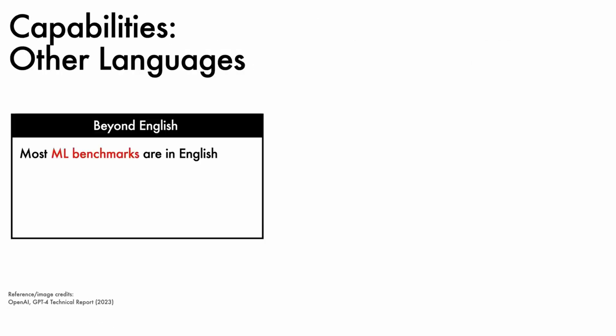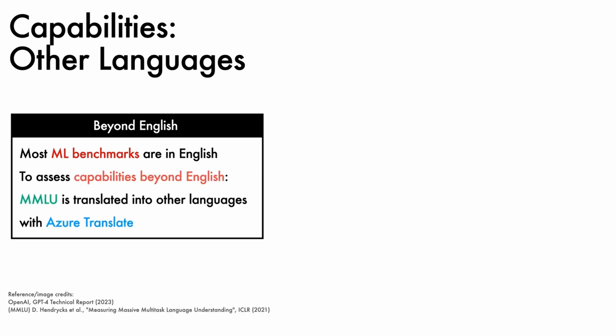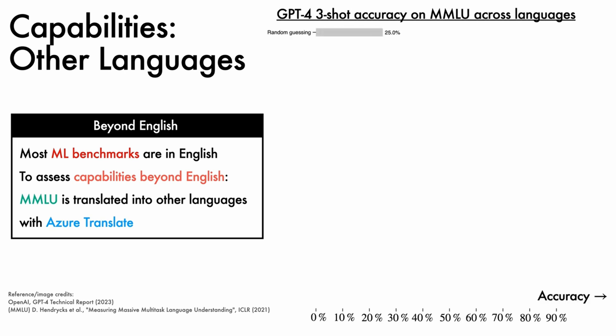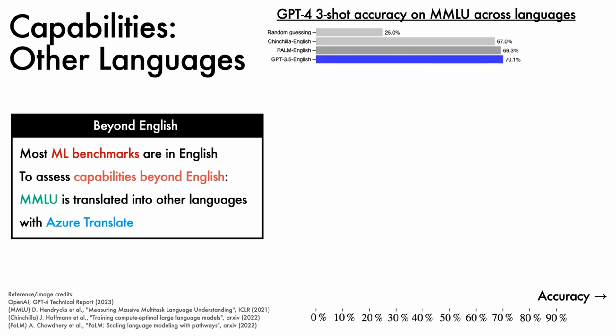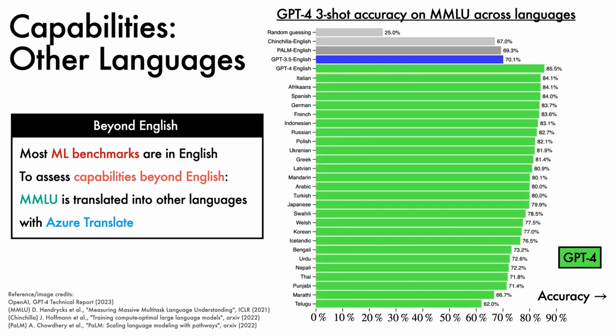Noting that most machine learning benchmarks are in English, the authors next assess the capabilities of GPT 4 beyond English by translating the MMLU benchmark into other languages using Azure Translate, then re-evaluating the model. We can examine the results by plotting accuracy along the x-axis, and noting that a random guessing baseline scores 25%. Other points of reference include evaluations on the English variant of the benchmark. The Chinchilla model from DeepMind scores 67%, PaLM from Google Research scores 69.3%, and GPT 3.5 scores 70.1%. In this setup, GPT 4 scores 85.5%. Across a range of other languages, it is found that GPT 4 outperforms compared to existing large language models.